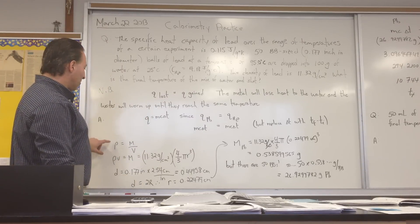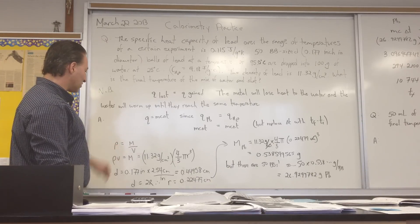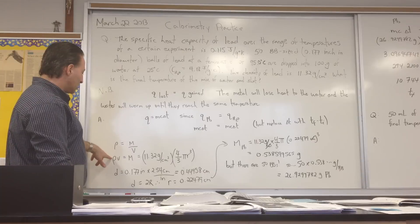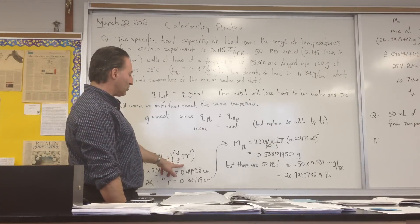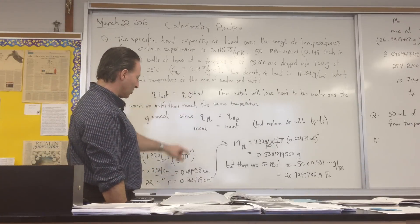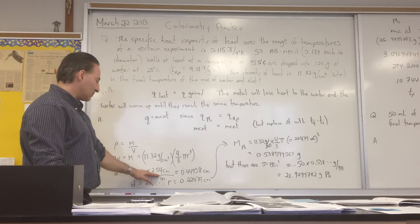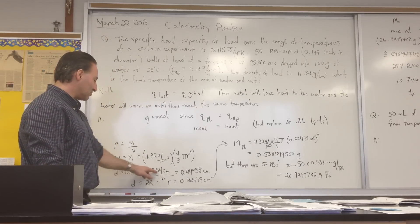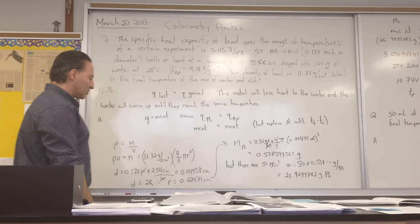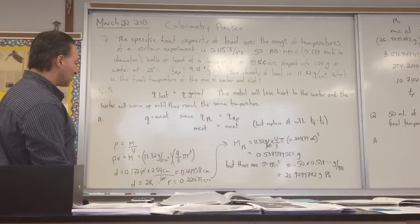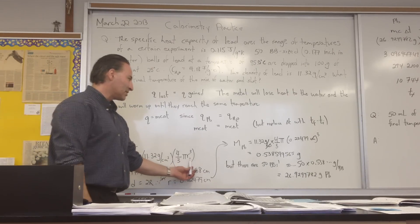Before we even start to solve this problem though, we have to find out how much lead is in the experiment. So we're going to use the density format, density equals mass over volume. We're going to rearrange to solve for the mass of lead. Here's the density of lead, here is the volume of a sphere, and the little balls are all spheres. Here is the diameter in inches, we're going to convert it to metric. So we're going to multiply inches by 2.54 cm per inch, that's going to cancel inches, and we get that the balls are 0.44 cm in diameter. Half of that is going to be the radius of the ball, which allows us to plug into this equation.